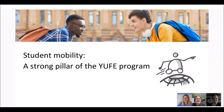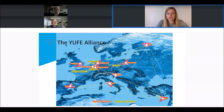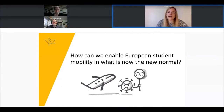For UFE, as for many other European University initiatives, student mobility is a very strong pillar of its program. With the COVID crisis, this led to a lot of discussions on how we can enable this student mobility even in times of COVID. Looking at the map where all UFE Alliance partners are — in 10 different countries — during the lockdown, student mobility was not possible. The question was how we can still enable such a European student mobility experience in the new normal.